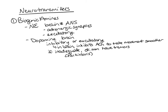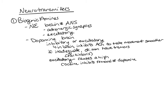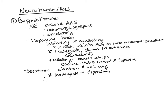Dopamine's excitatory effects produce a high in the brain. Cocaine inhibits the removal of dopamine from synapses, so dopamine remains present longer, creating a high. Another biogenic amine is serotonin, which affects attention and emotional states and creates a sense of well-being. Inadequate serotonin causes depression. An antidepressant such as an SSRI — Selective Serotonin Reuptake Inhibitor — increases serotonin levels by inhibiting the reabsorption of serotonin by the synaptic terminal.